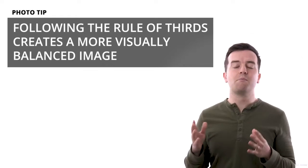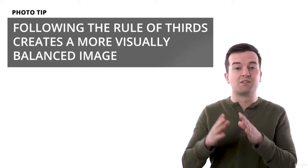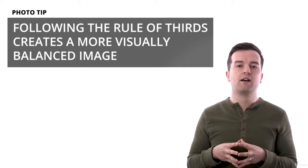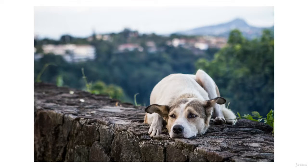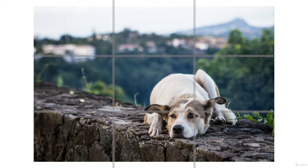Centering your subject is the natural thing to do, but to create a more balanced photo that is more pleasing to the viewer's eye, following the rule of thirds can help. This means placing the subject of your photo to the left or right of the center of the frame. More specifically, this means overlaying your frame with two horizontal and two vertical lines — placing your subject near the intersection of these lines is what we mean by the rule of thirds.